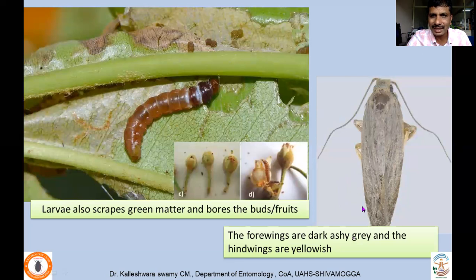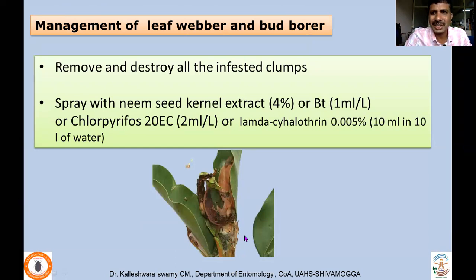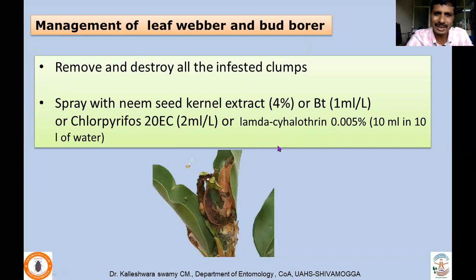The adult belongs to family Galechidae — a very minute moth. The forewings are dark ash gray colored and the hindwings are yellowish. To manage both the leafwebber and bud borer, collect the clump of infested portions and burn them so that all life stages inside can be killed, inhibiting further progress to the next generation. Alternatively, spray with neem seed kernel extract, or Bacillus thuringiensis commercially available formulations at 1 ml per liter of water, or chlorpyrifos 2 ml or lambda cyhalothrin at 10 ml in 10 liters of water.